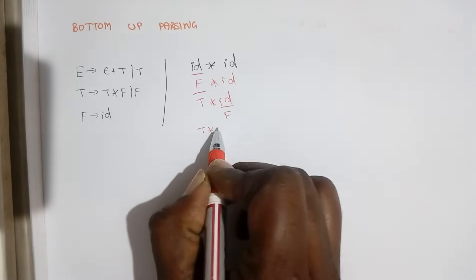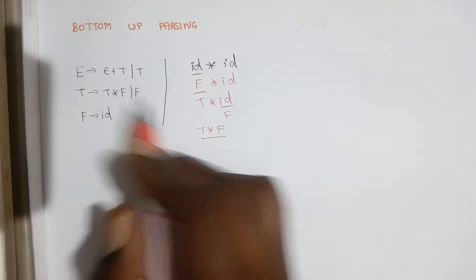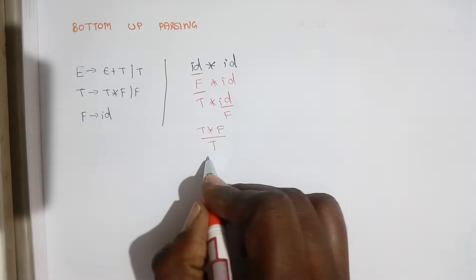So it will be T star F and finally for T star F it tends to T and we have E tends to T.